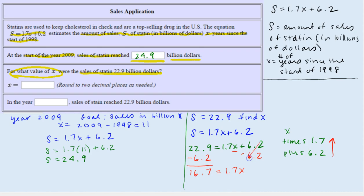These would cancel out, 6.2 minus 6.2 is 0. Now we want to reverse multiplying by 1.7, so we're going to divide by 1.7 on both sides.